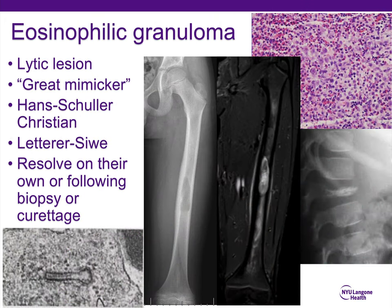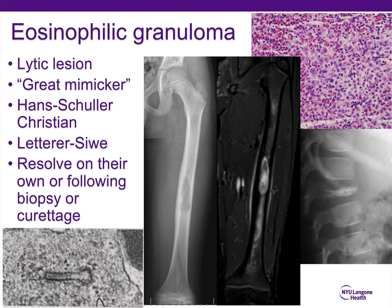Eosinophilic granuloma — these are typically diaphyseal and known as the great mimickers, so it's difficult sometimes to come to the diagnosis. It is associated with many syndromes that have a high mortality at a young age. However, when they appear isolated, such as a lesion in the femoral shaft, they typically resolve on their own, typically after a biopsy or curettage. They could develop vertebra plana in the spine, and under electron microscopy the Birbeck granule is diagnostic.